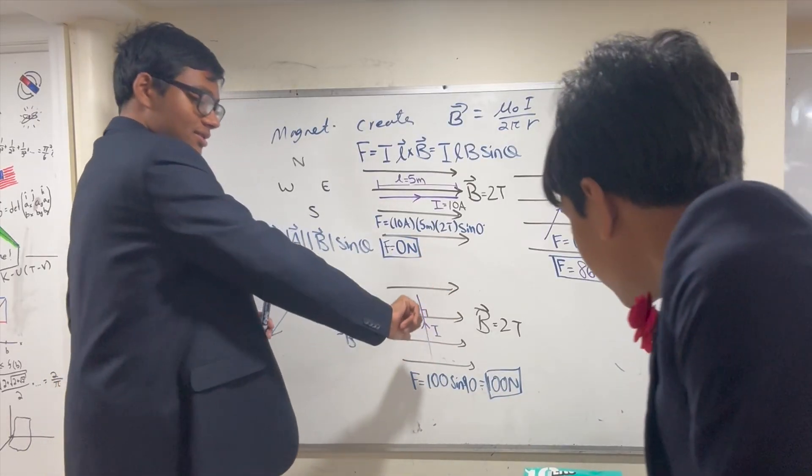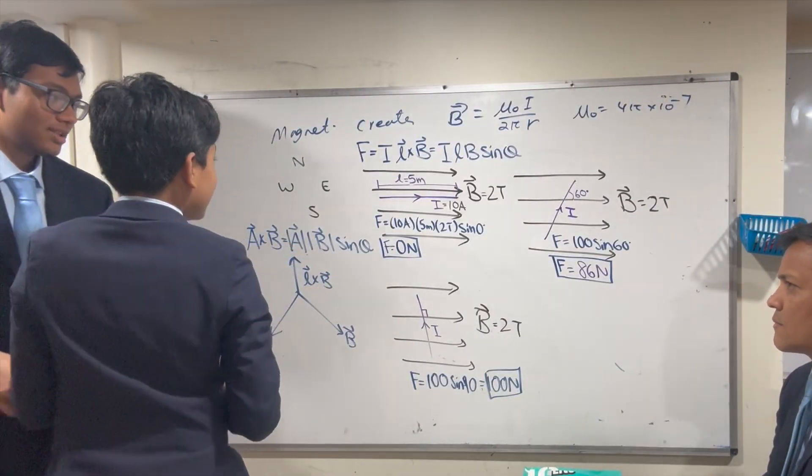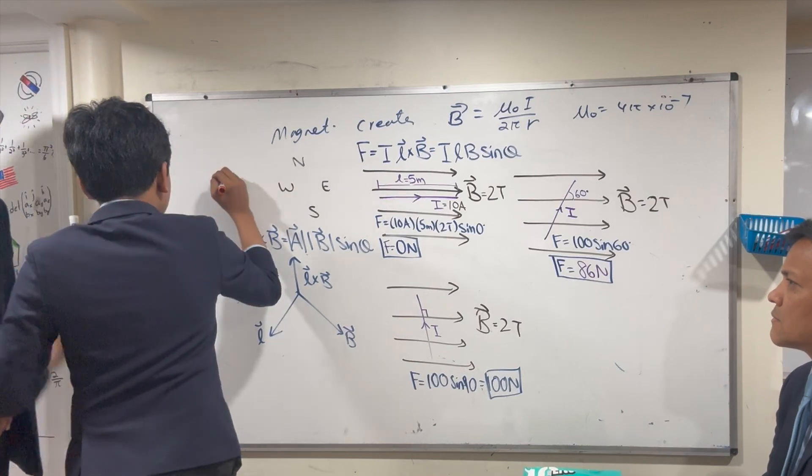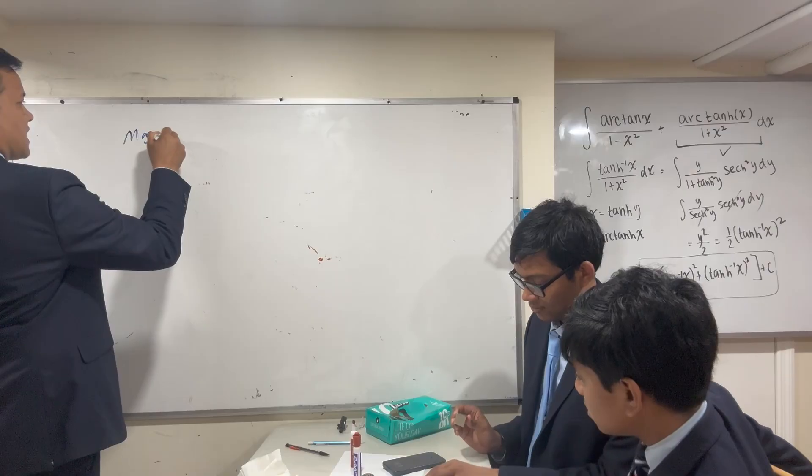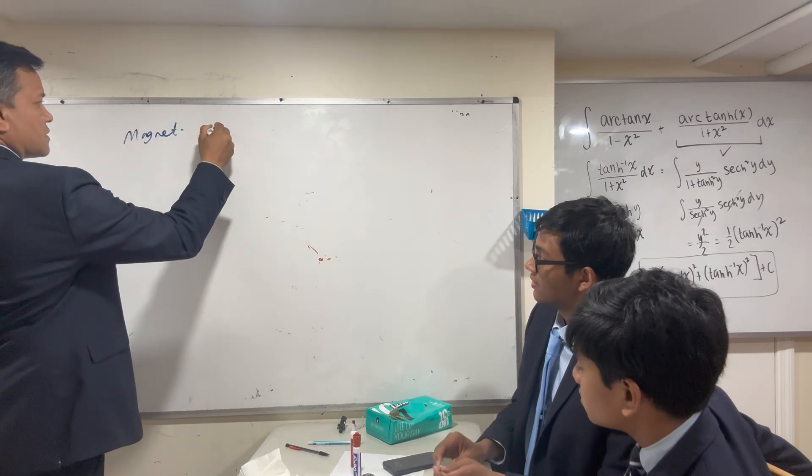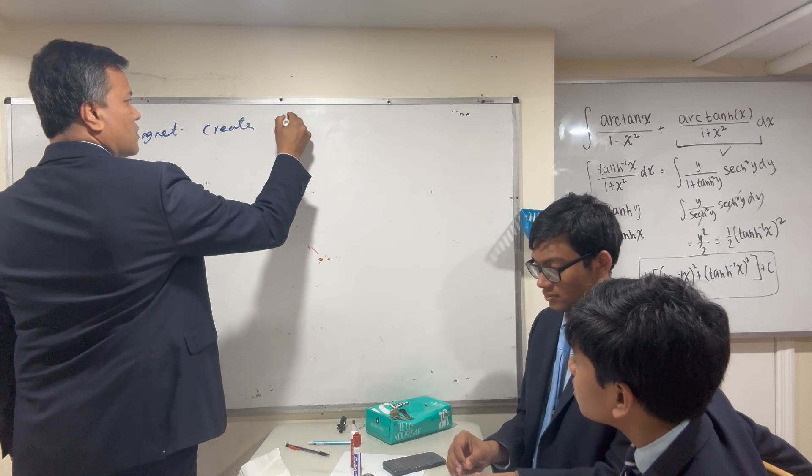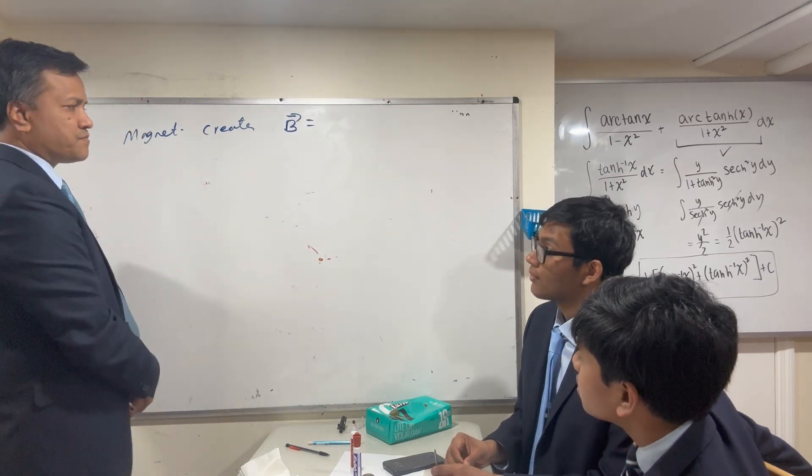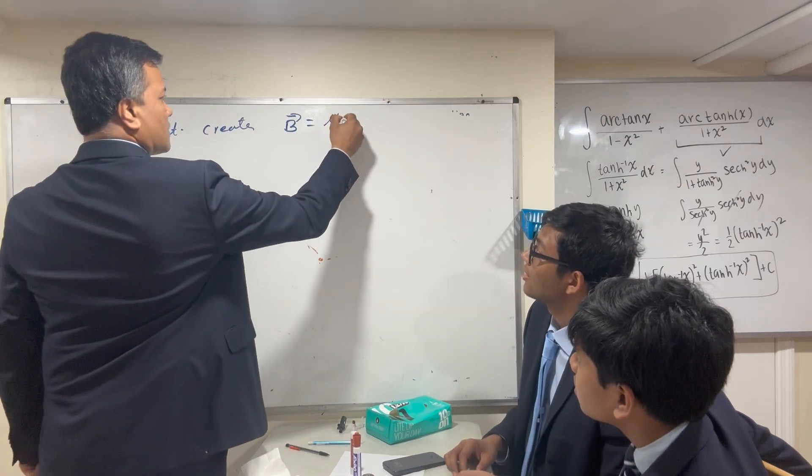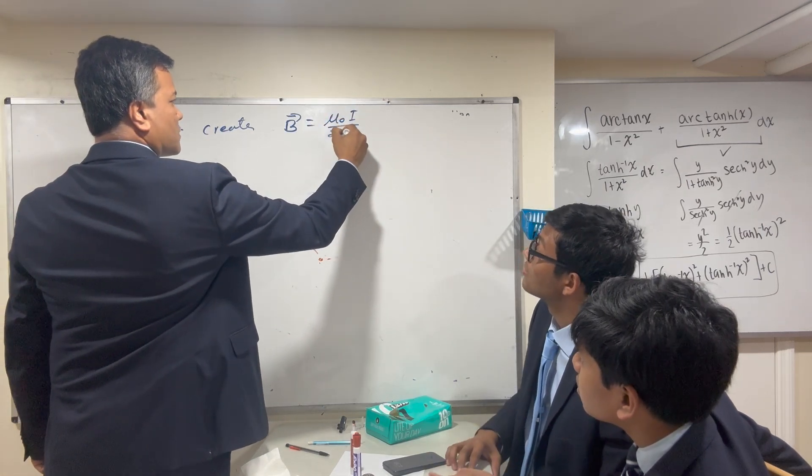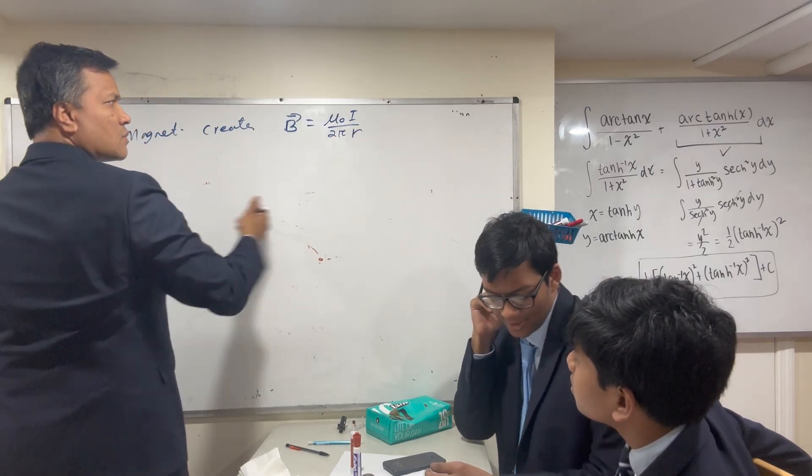Such B is a vector. A magnet creates what? Magnetic field. So tell me the equation. μ₀I over 2πr, but it should be a vector, so yes, that's the deal.